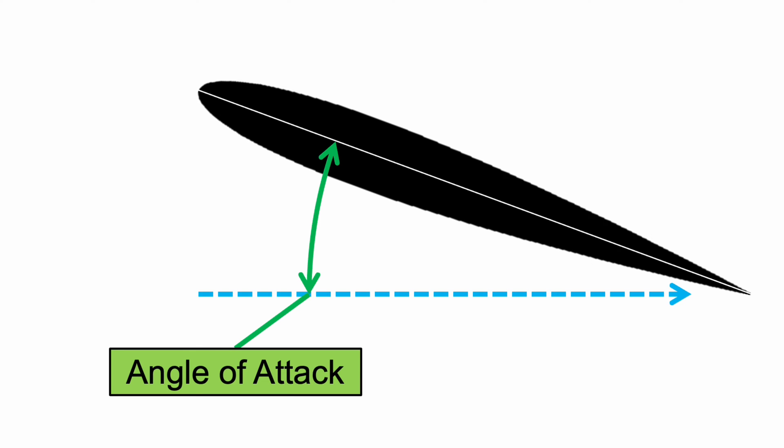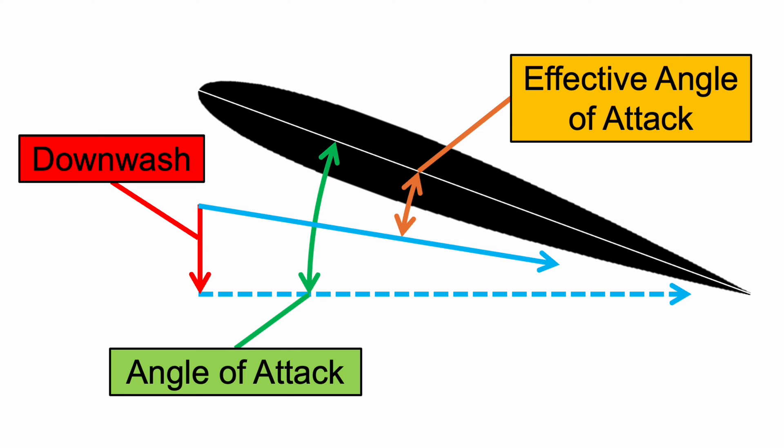Another way to think about this is that the wingtip vortices effectively decrease the angle of attack. As we talked about in our lift force video, the angle of attack is the angle between the free stream and the chord line, and greater angles of attack produce greater lift coefficients and more lift force. When we add downwash into the free stream, however, the angle of attack is effectively reduced, which means we will have a lower lift coefficient and less lift force.